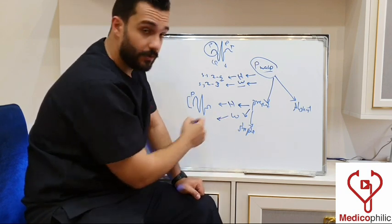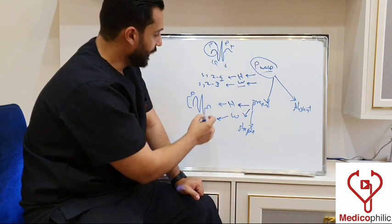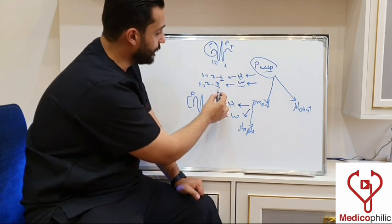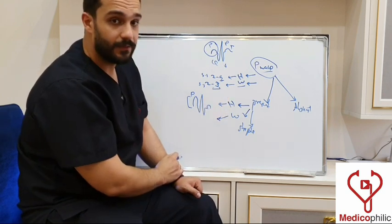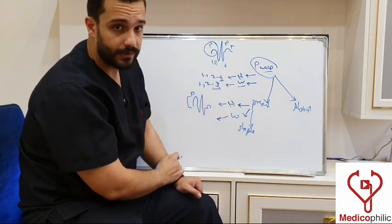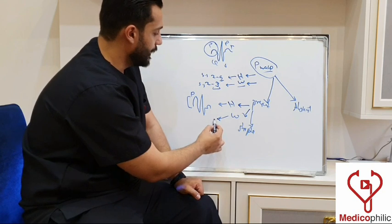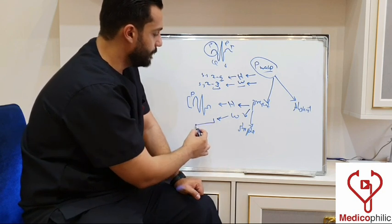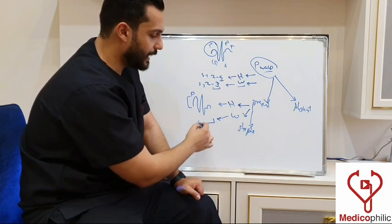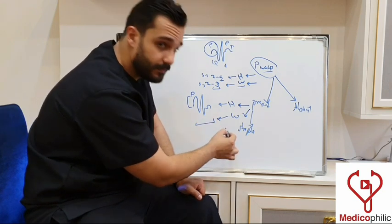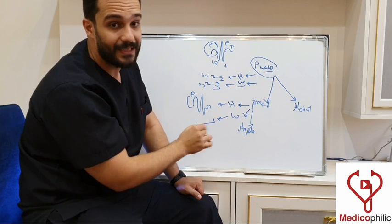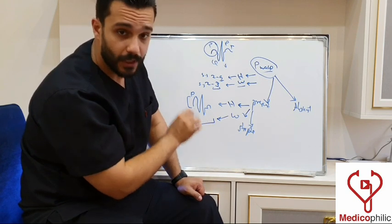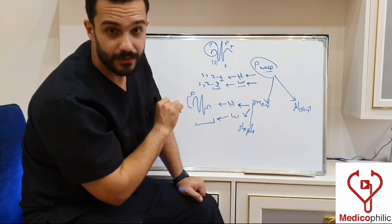Looking at the width of the P wave: if the P wave is wider than three small squares, it will appear as a wide P wave, and this indicates atrial conduction abnormalities.